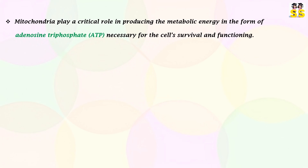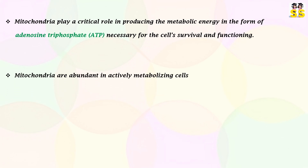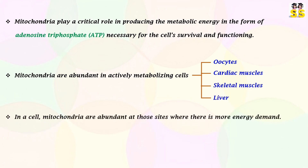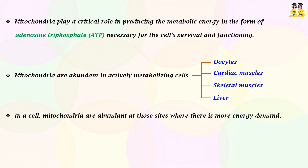Mitochondria play a crucial role in generating the metabolic energy in the form of ADP necessary for the cell's survival and functioning. Actively metabolizing cells tend to have greater numbers of mitochondria. Cells like oocytes, cardiac muscles, skeletal muscles, and liver contain hundreds or thousands of mitochondria. Mitochondria are abundant at those sites in the cell that require a lot of energy.